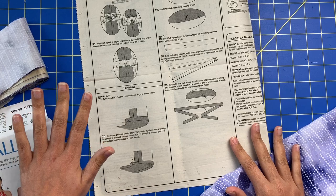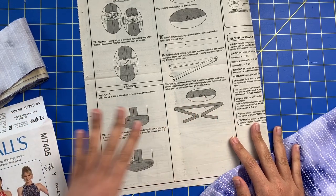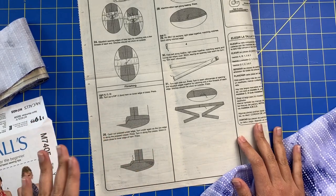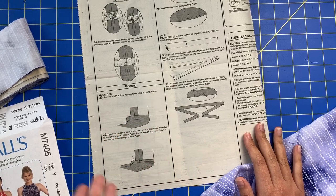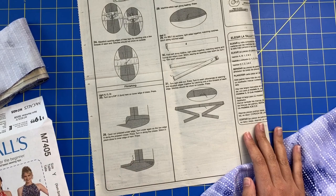We are on step number 25 under the category finishing, which is a very appropriate term for what we're doing. The good news is everything that we are going to do in this portion of the video, you have already done in one way or another. Essentially, you already know how to finish your dress because you've done all of these techniques already. But I'm going to take you through them step by step.